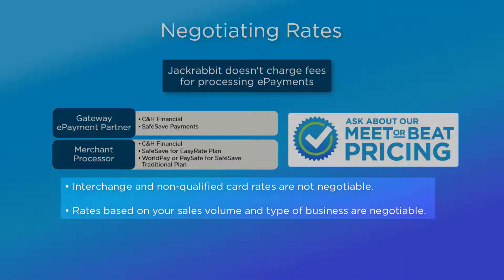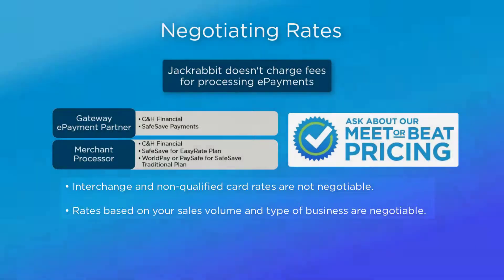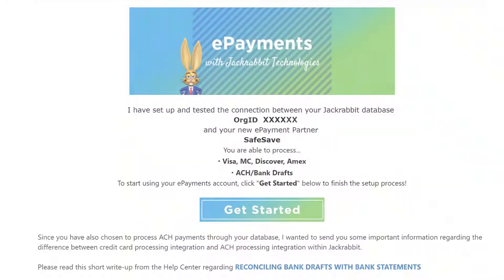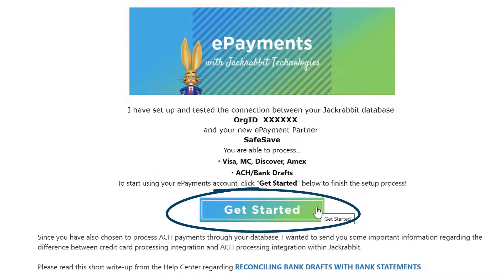The entire process to get set up with a payment partner takes about a week from the time your completed application is submitted, and you will be notified in an email from the JackRabbit ePayments team.